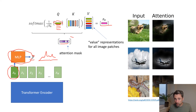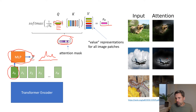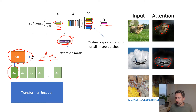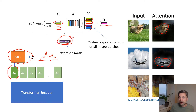If we look at the attention mask, entries that are high correspond to regions in the image that were relevant in the mixing procedure — that vector-times-matrix multiplication. These regions make sense, and it's also a cool way to explain the classification output.